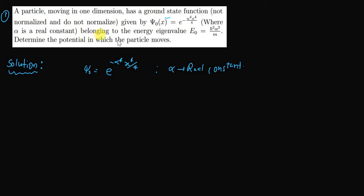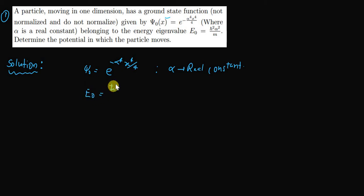This ground state wave function belongs to energy eigenstate E₀, where E₀ = ℏ²α²/m. This is the given ground state energy.